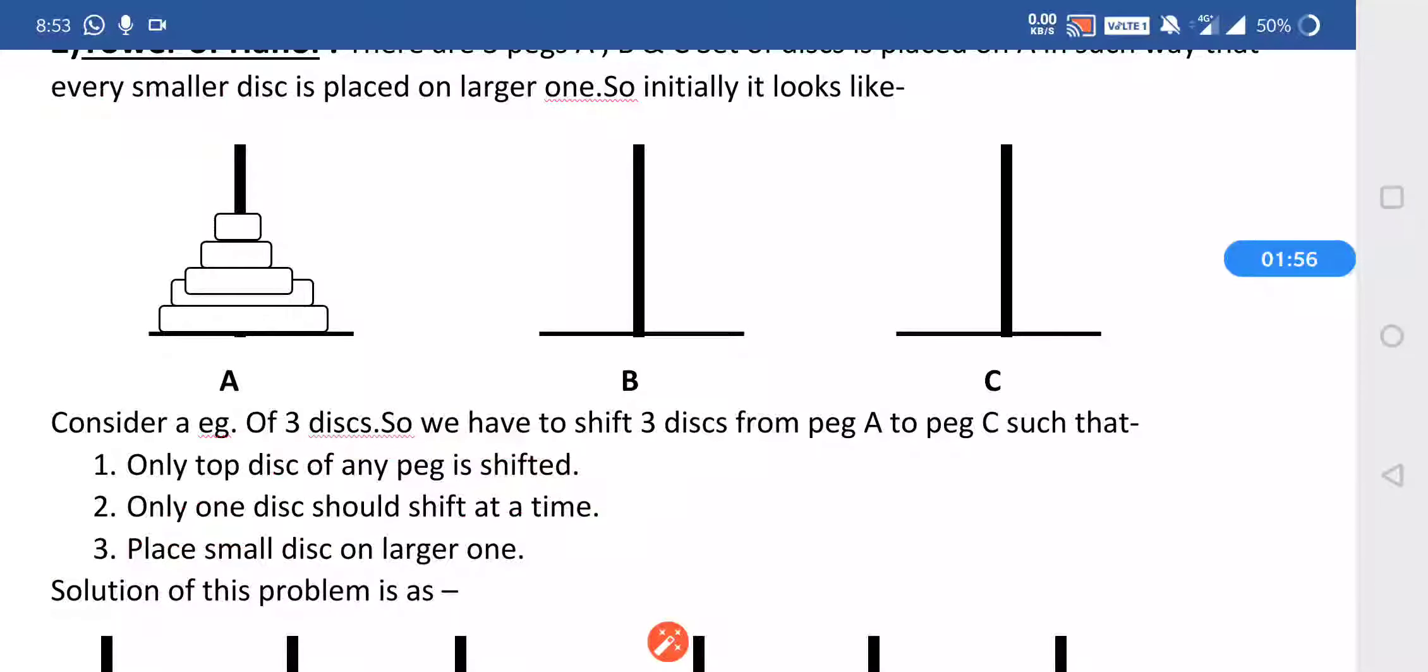The third rule is that we cannot place a large disk on a smaller disk. We have to always place the smaller disk on the larger disk.